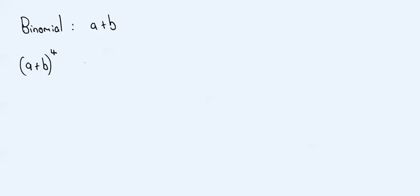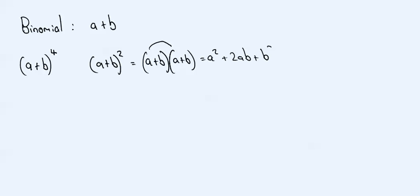Okay, so you know how to expand a plus b squared, and that's just by a plus b times a plus b, which if you use the FOIL method, it's a squared plus 2ab plus b squared.